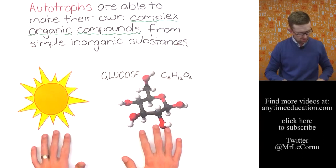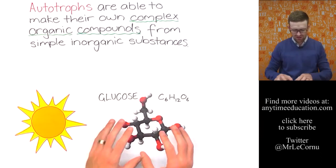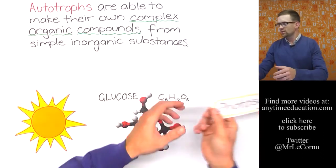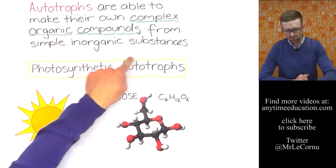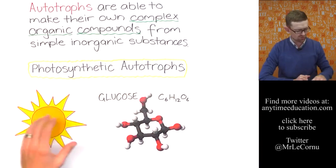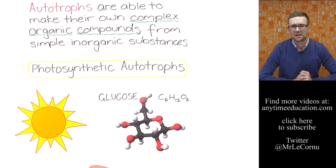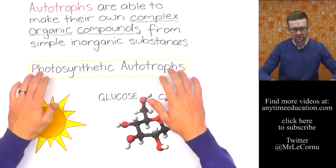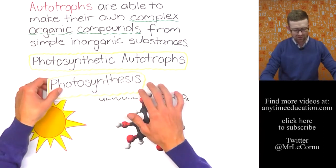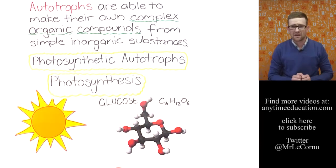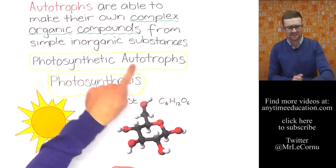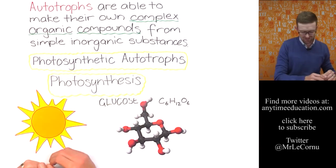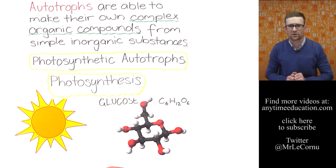Now the autotrophs that use light energy to produce chemical energy in the form of this glucose molecule they're called photosynthetic autotrophs. I've circled that word in yellow so that when you think of photosynthetic autotrophs you think of sunlight because that's the key player in carrying out that process. And the process that they use if you haven't already worked it out is called photosynthesis. Now if you want some specific information about how photosynthesis converts simple inorganic substances using light energy into complex organic compounds like glucose you should check out the video called what is photosynthesis.